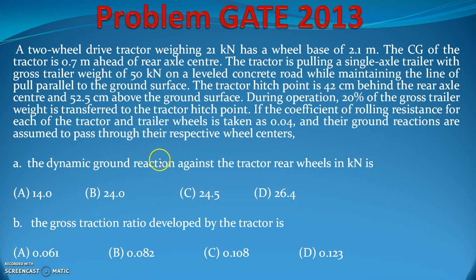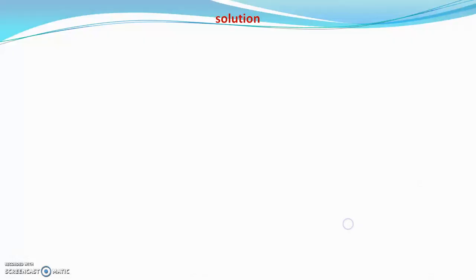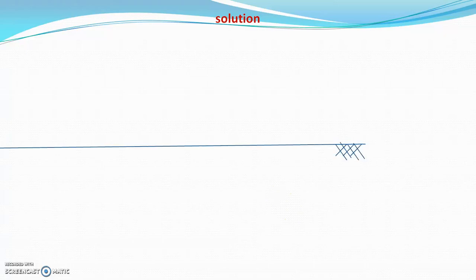You need to find: first, the dynamic ground reaction on the tractor rear wheel in kilonewtons, and second, the gross traction ratio for the tractor. To solve this, the first thing you need to do is draw a free body diagram of the tractor showing all the forces.